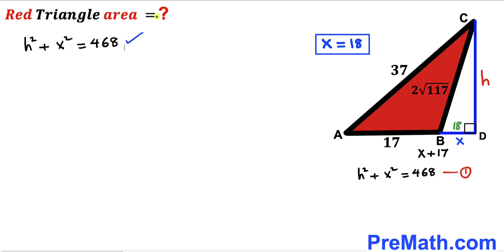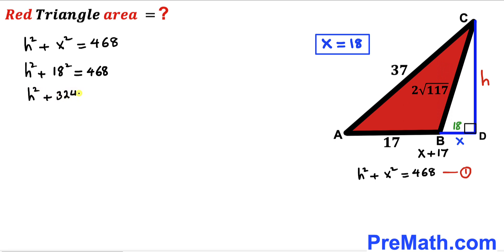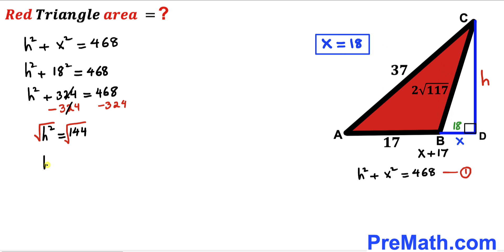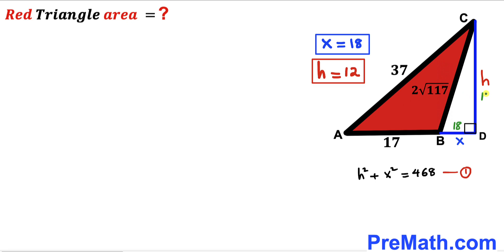Let's go back to equation one. We know x = 18, so substituting gives h² + 18² = 468, which simplifies to h² + 324 = 468. Subtracting 324 from both sides gives h² = 144. Taking the square root of both sides, our height h turns out to be 12 units.